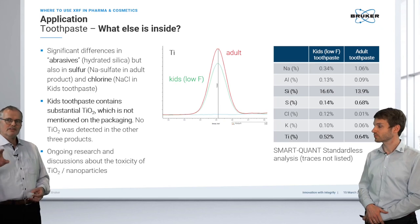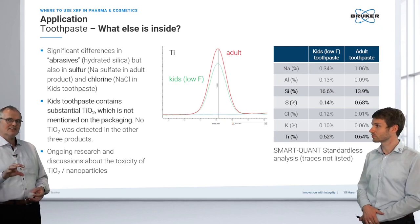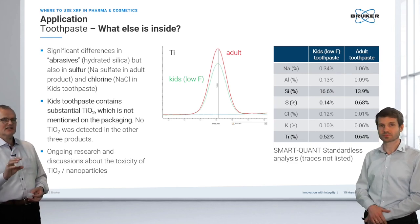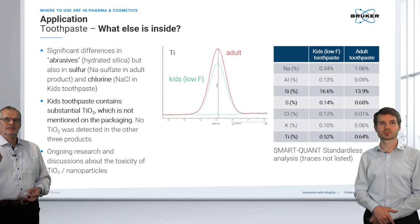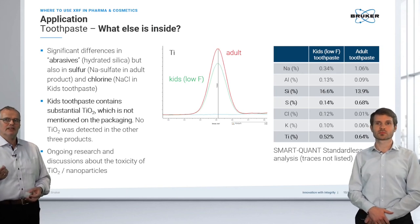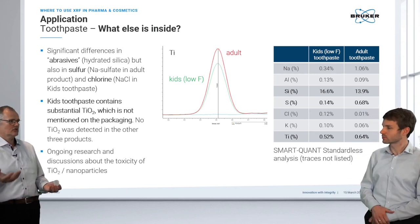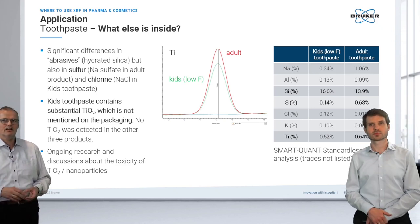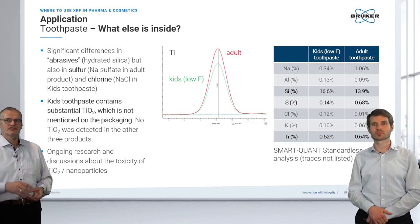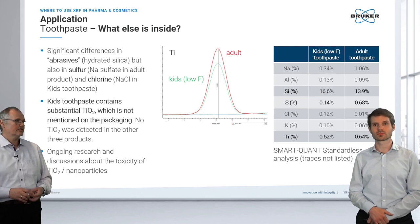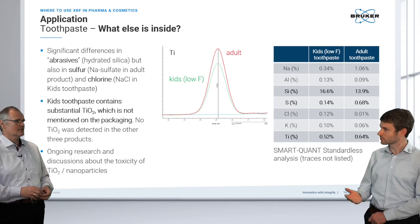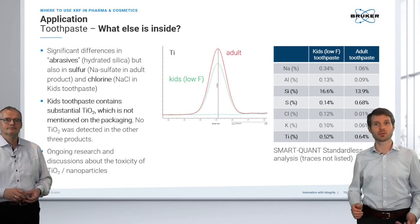An important note: XRF, like other methods, cannot detect compounds directly — we analyze elements and calculate back. For example, we analyze titanium and calculate back to titanium dioxide, or hydrated silica, converting to the original content of the oxide or compound.